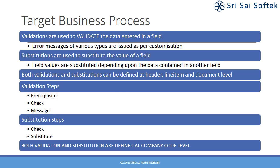Validations are issued to validate the data entered in a field. For example, you want to enter a particular value in a particular field, such as currency should be company code currency. Then, if you enter wrong data — that is, any other currency in the currency field — error messages of various types are issued as per your customization. Error messages can be warning, cancel, exit, or just continue. These error messages are triggered by your validation settings.